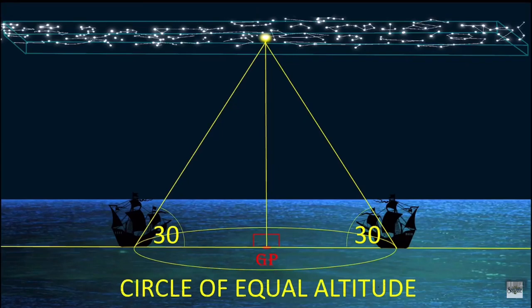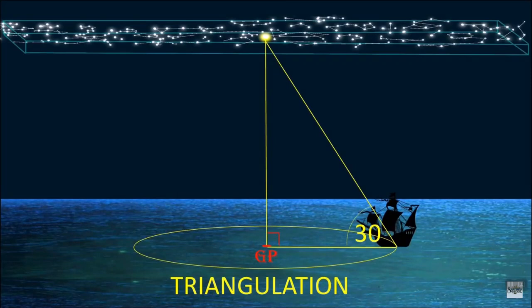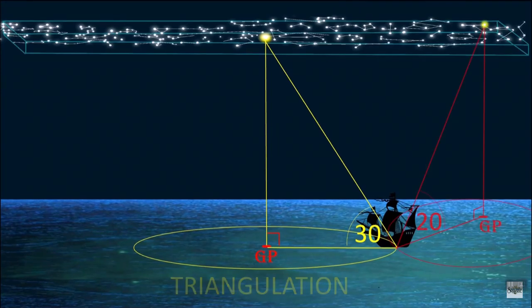By doing this once with a sextant, you know you are somewhere on that circle of equal altitude. To triangulate your actual position, you need to repeat these steps with other stars.